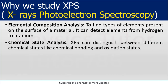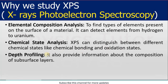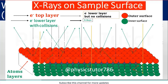In the second application, we can find chemical state analysis. XPS can distinguish between different chemical states like chemical bonding and oxidation state. In the third step, we have depth profiling, which provides information about the composition of surface layers. As shown in the diagram, different layers are present and a deep view is given by XPS, which will be explained further in this video.